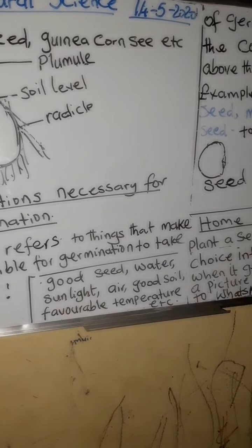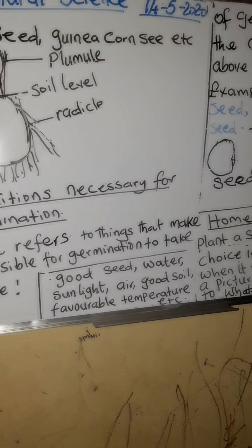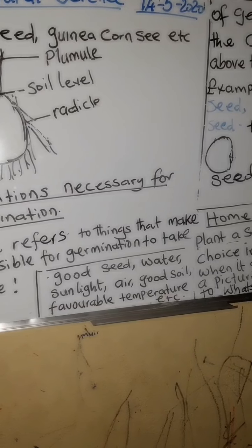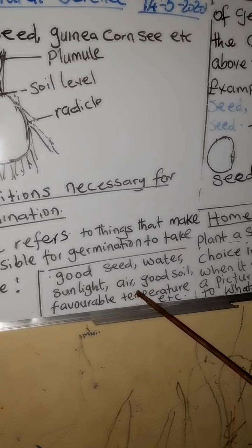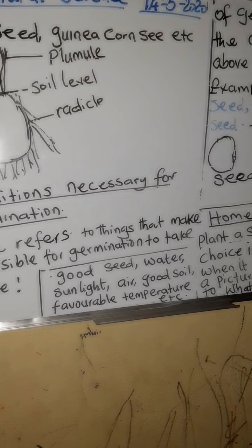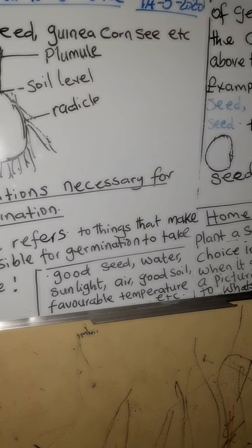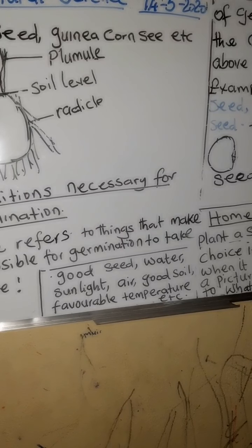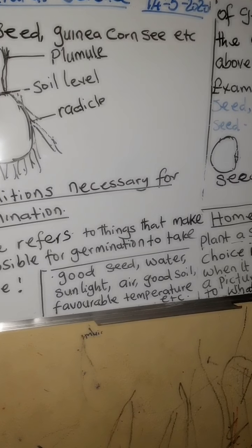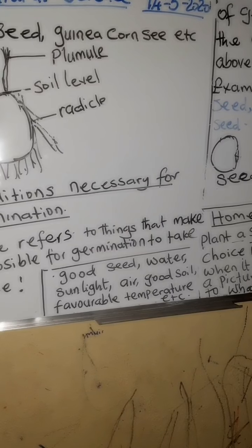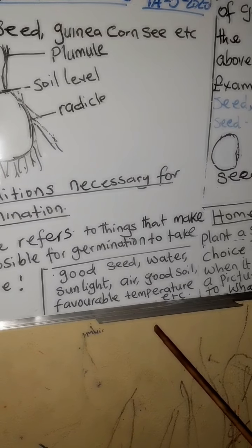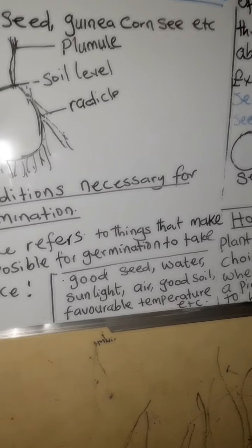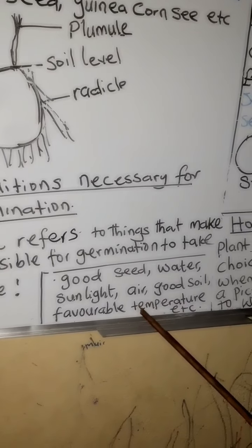Plants also need sunlight to warm their body, and they need air. You can see the leaves moving and waving when there is air — they will be happy. We human beings also need air; we breathe in air. Plants also breathe in air, and their air is called carbon dioxide.